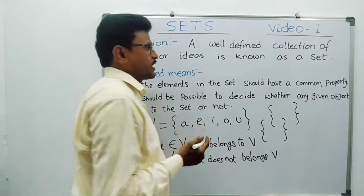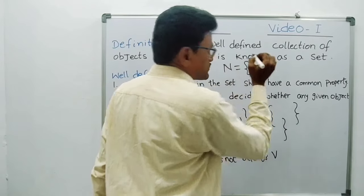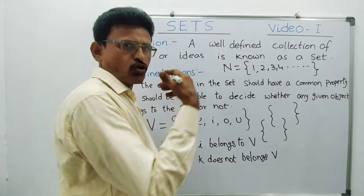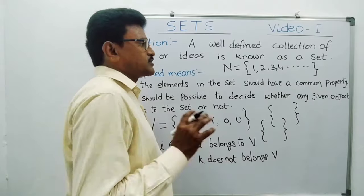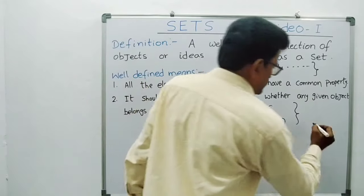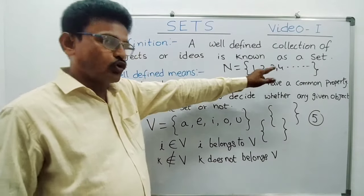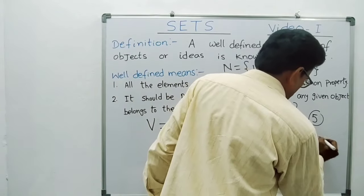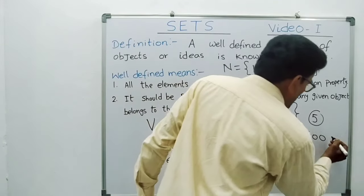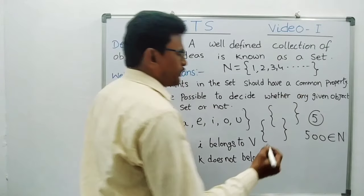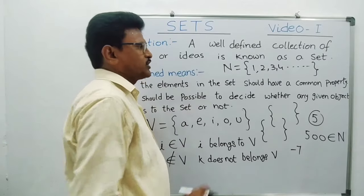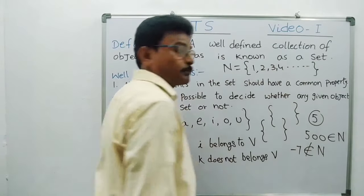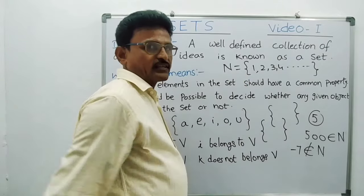One more example — N is the natural number set. Natural numbers start from 1, 2, 3, 4 up to infinity. Is 5 in the natural number set? Yes, 5 will come in that group. What about 500? Yes, 500 also belongs to the natural number set. What about minus 7? In natural numbers, negative numbers are not there, so minus 7 does not belong to natural numbers. It means this natural number set is also a well-defined set.